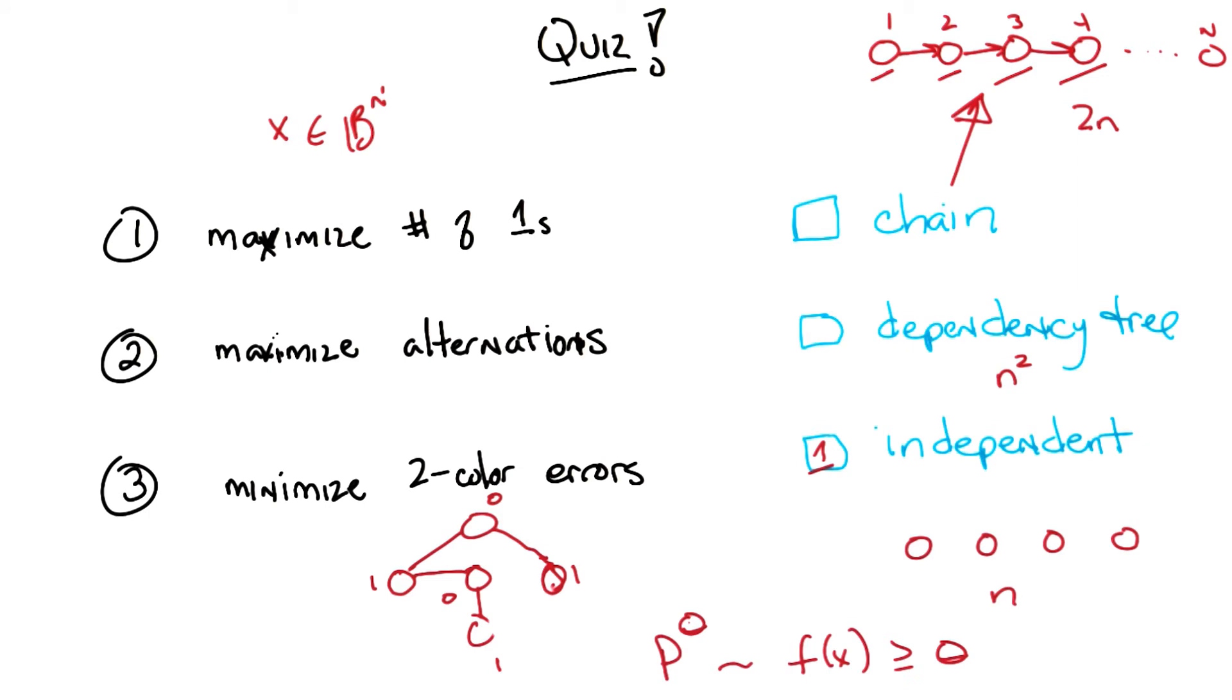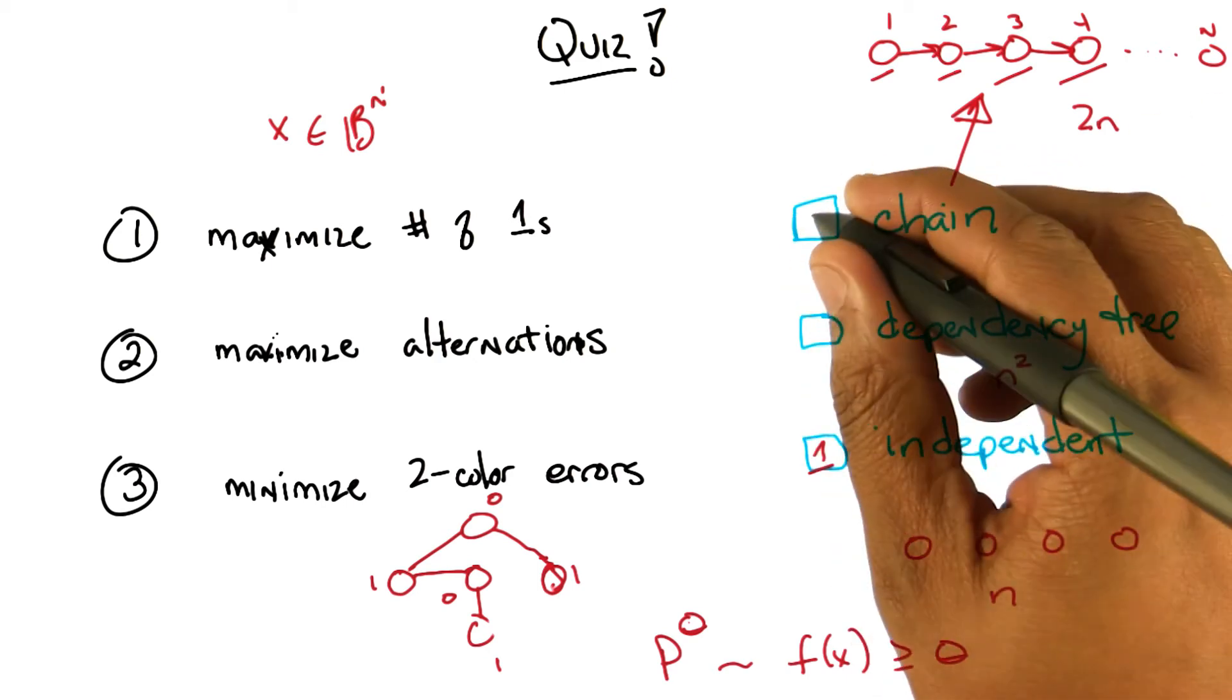So for number two, problem two, maximize the number of alternations. We pointed out that it's really important to know who your neighbor is because you want to be a different value than your neighbor. And the chain gives you exactly that information without anything extra. Right. So I would put the two in the first box. Yep.